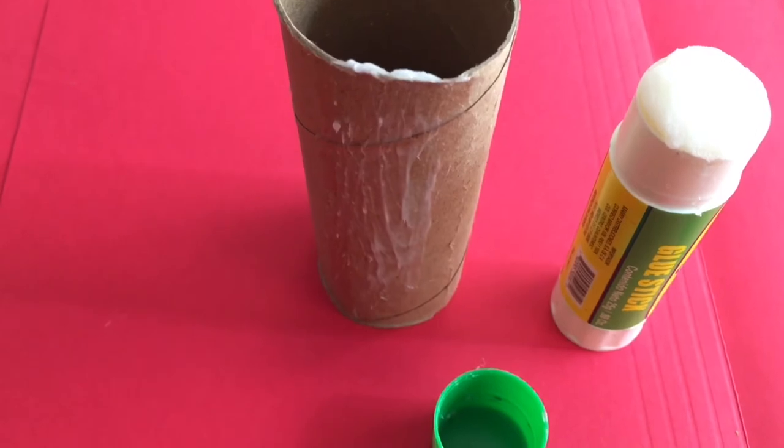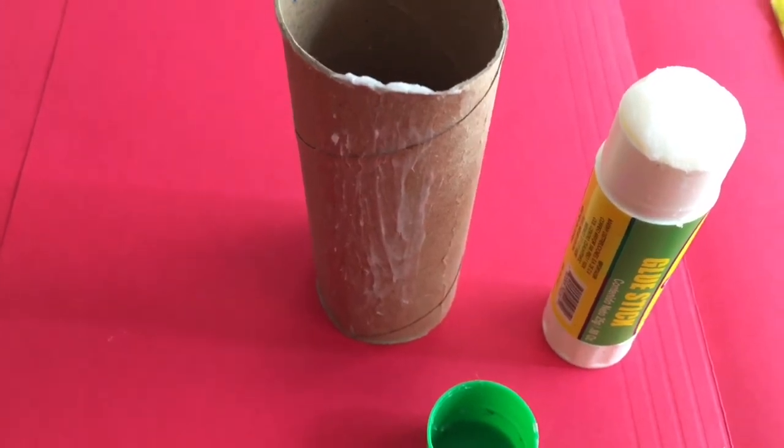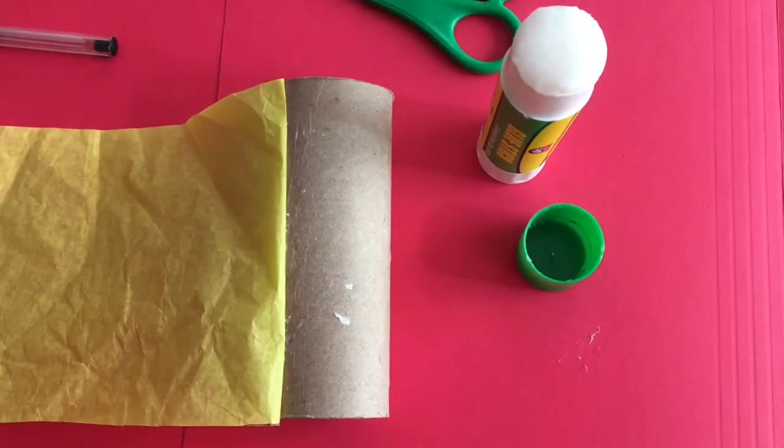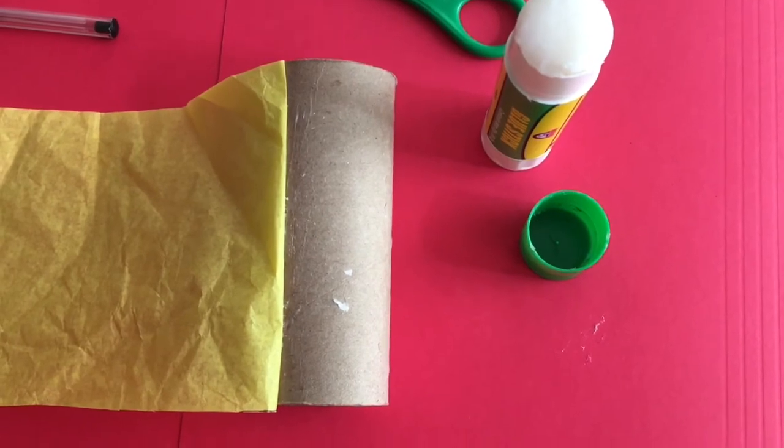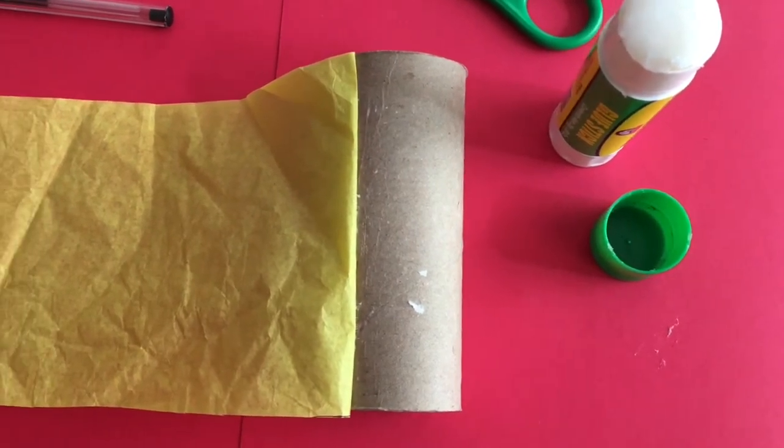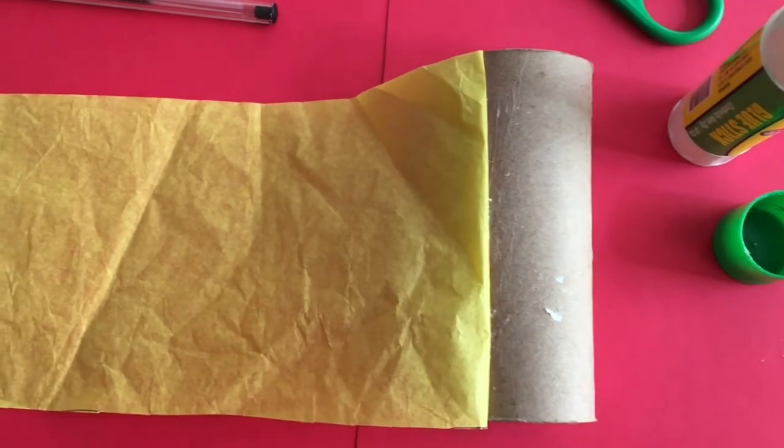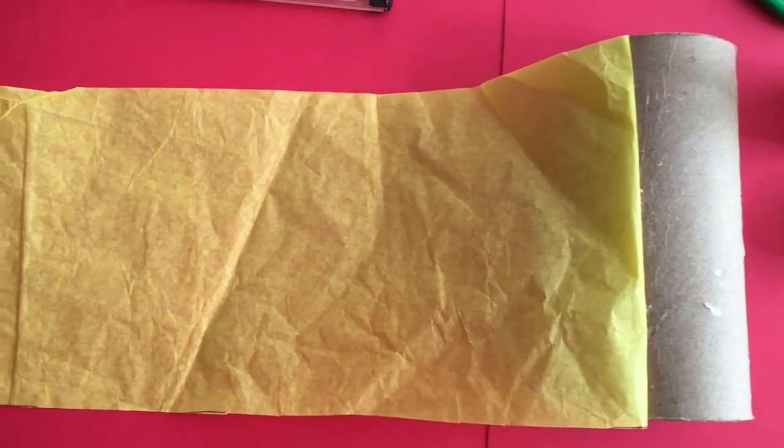Use your glue stick and cover all the toilet paper roll. Now it's time to paste the yellow paper. Remember that you have to cover all the toilet paper roll with the yellow paper.